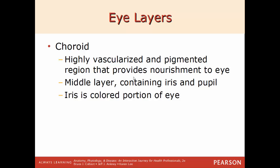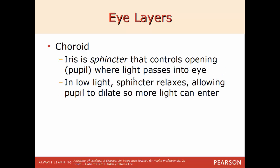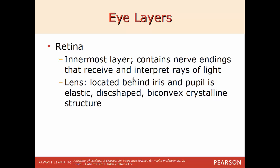In the middle layer you'll find the iris and the pupil. The iris is a sphincter that controls the opening through which light passes into the eye, controlling how large or small the pupil is. In very low light the sphincter relaxes, allowing the pupil to dilate so more light can enter. This is also why your pupils are dilated at the optometrist — so they can see inside your eyeball in more detail. The retina is the innermost layer and contains the nerve endings that receive and interpret rays of light.